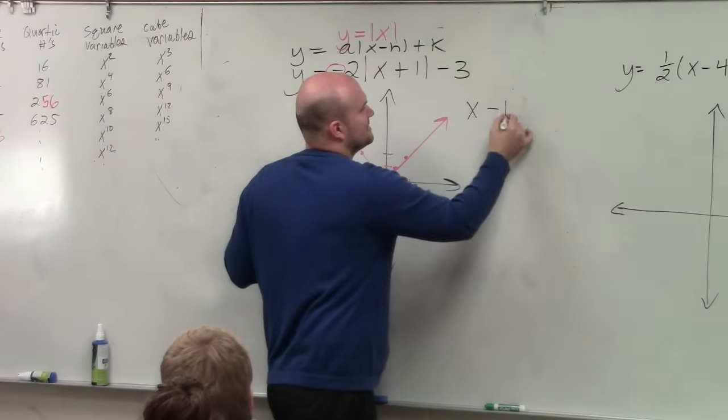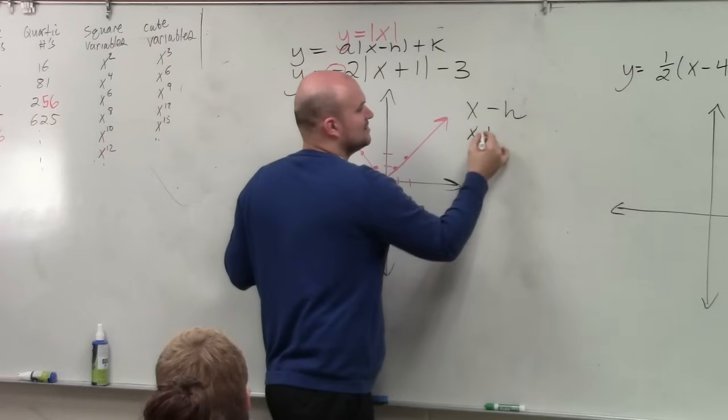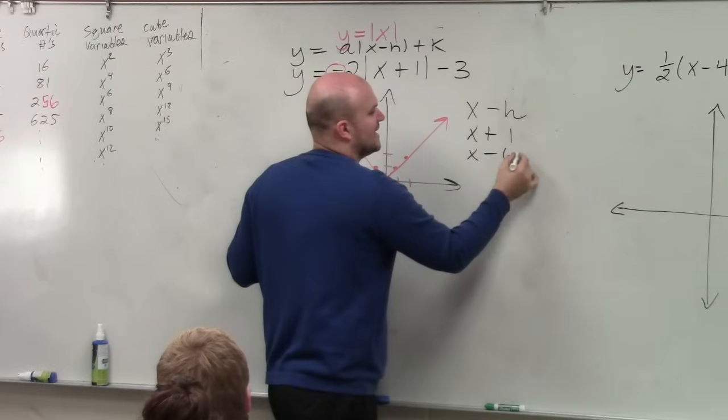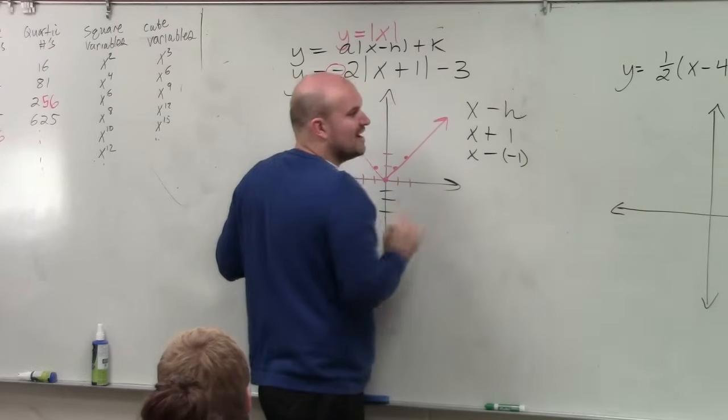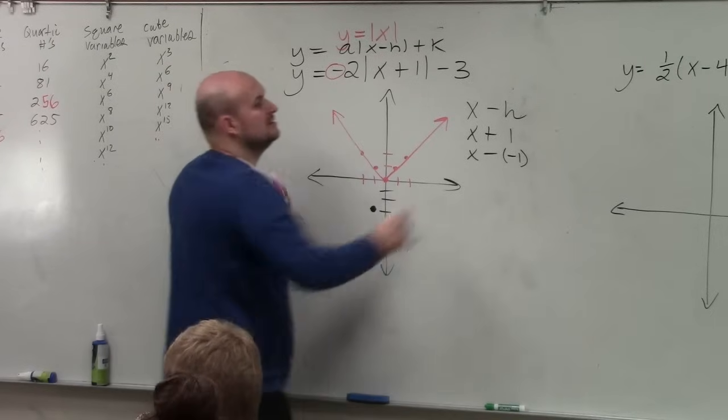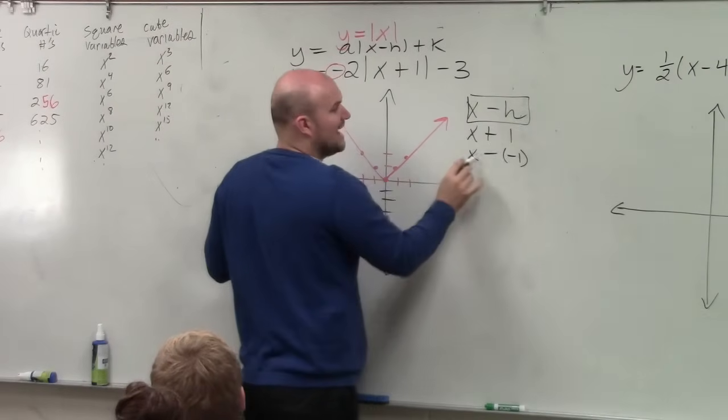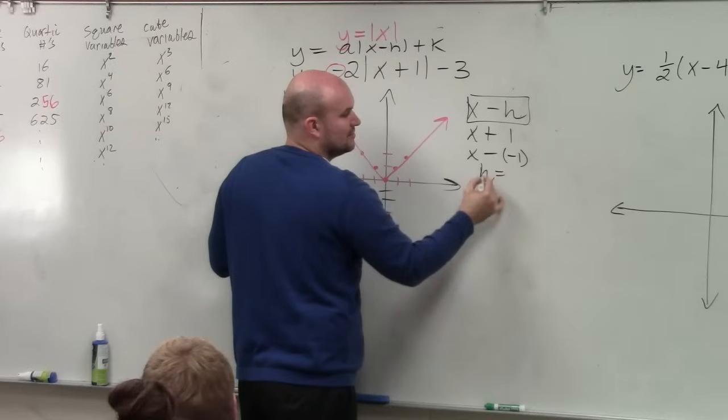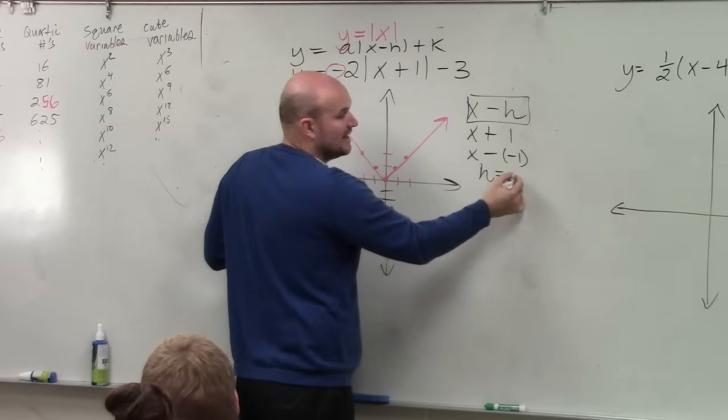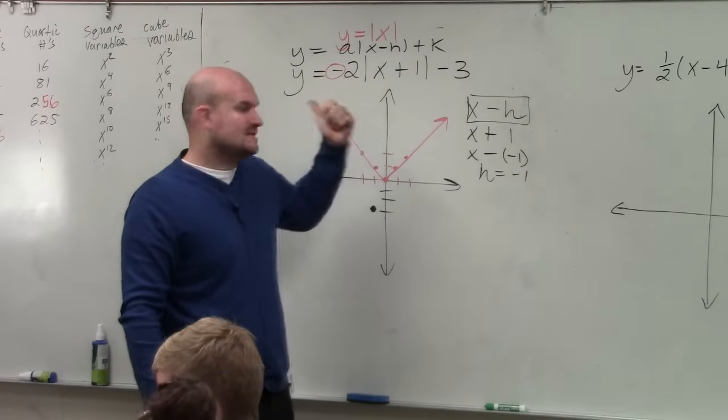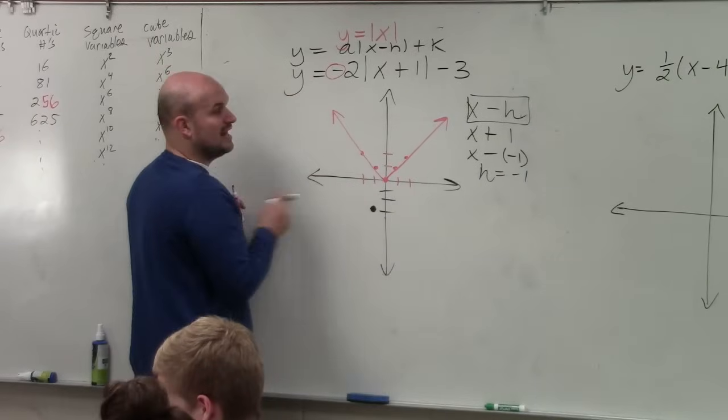It's x minus h. x plus 1 is the same thing as x minus negative 1. So what's the value of h? When x minus h is the formula, x minus negative 1, what's the value of h? h is equal to negative 1, so you go left. Just always think it's always the opposite inside the function. It's always the opposite. So that's why we're going to the left.